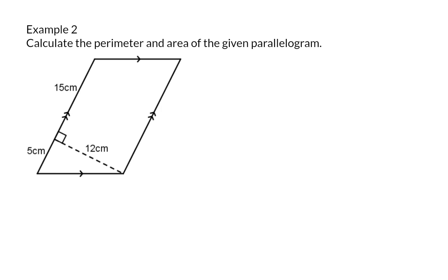Example 2. Calculate the perimeter and area of the given parallelogram. If we immediately start with the perimeter, we know that we have two sides of 20 centimeters each, but the horizontal side lengths are not known.